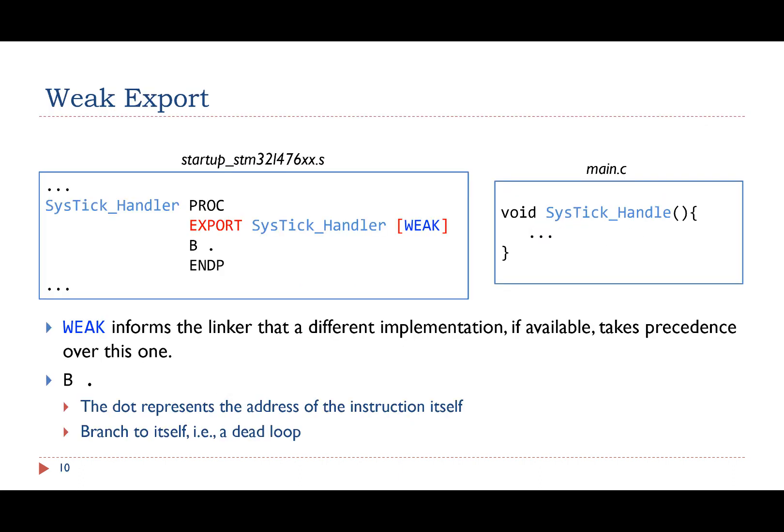A symbol can be optionally exported as weak. For example, the startup assembly code exports the symbol SysTickHandler with weak specified. The weak keyword informs the linker that a different implementation, if available, takes precedence over this one.